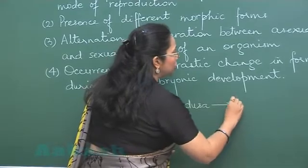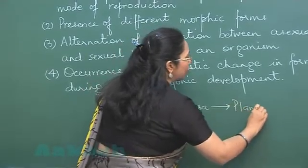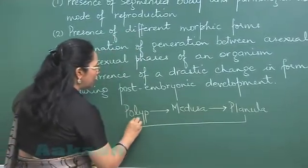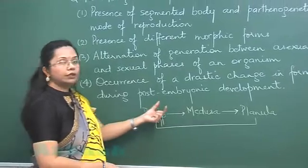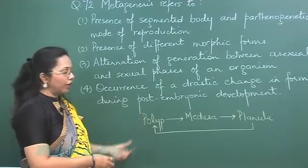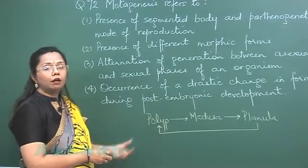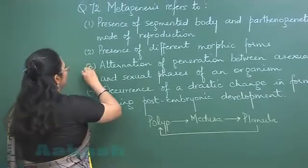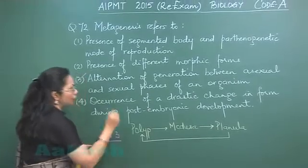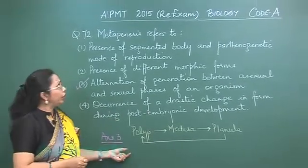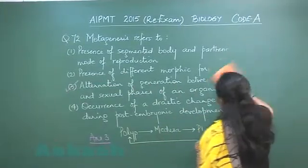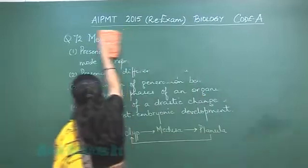The medusa is the sexual zooid; it produces gametes, which fertilize and give rise to a larval stage called planula. This planula then grows back into a polyp — so there is an alternation between sexual and asexual phases within the lifetime of the same organism. The best examples are Obelia and Physalia. Our answer is option three.